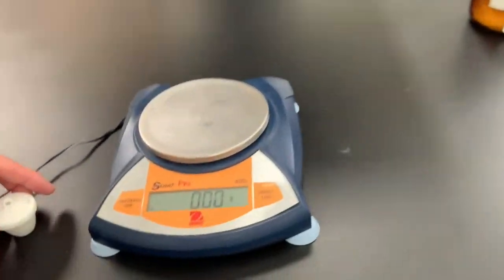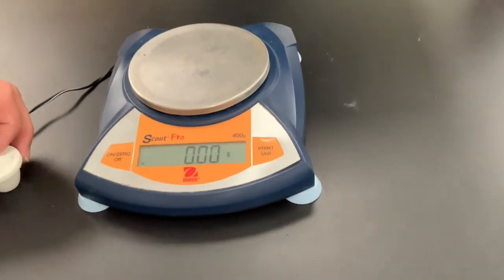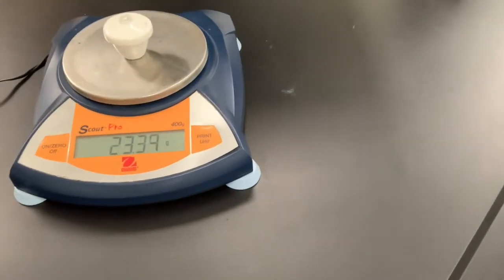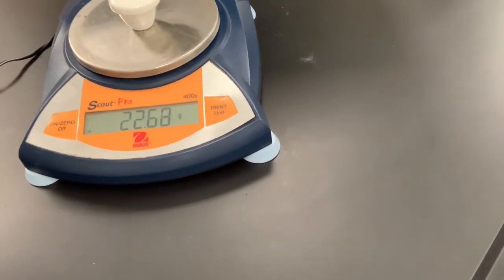First step, you want to weigh your crucible and lid. Hopefully your balance reads zero and we'll put that on there, and you want to write that number down.